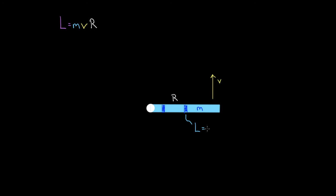If I break this continuous mass into individual pieces and find the angular momentum of each piece, then add them all up, I get the total angular momentum for the whole object. The angular momentum of some piece — say piece one — would be m₁v₁r₁, and for piece two it would be m₂v₂r₂. Keep in mind that these speeds are all different: the speed at the outside edge is fastest, and speeds closer to the middle are smaller, because they trace out smaller circles in the same time.